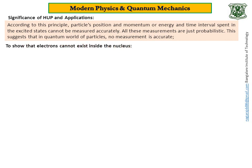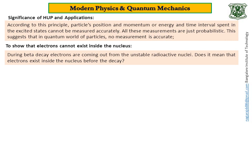Now let us see one application: to show that an electron cannot exist inside the nucleus. During beta decay — the emission of electrons from radioactive nuclei — electrons come out from unstable radioactive nuclei. Does it mean the electron existed inside the nucleus before the decay? This question was unanswered for many years, and the mystery was solved only after the formulation of Heisenberg's uncertainty principle.